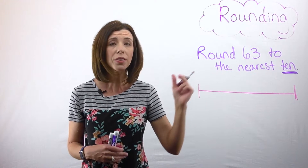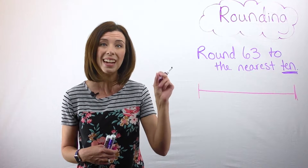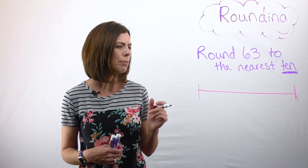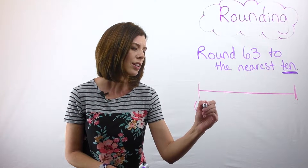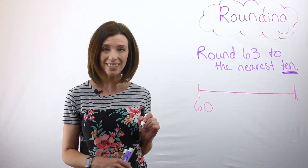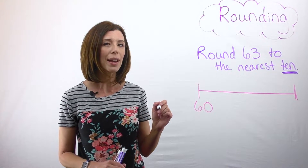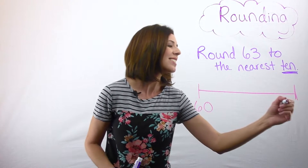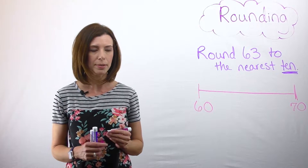If you build the number 63 with your base ten blocks, you can see that you've got six rods and three cubes, or six tens and three ones. So I'm thinking that you could show up at my house with either $60, or six tens, or you could show up with $70. Those are your two options.